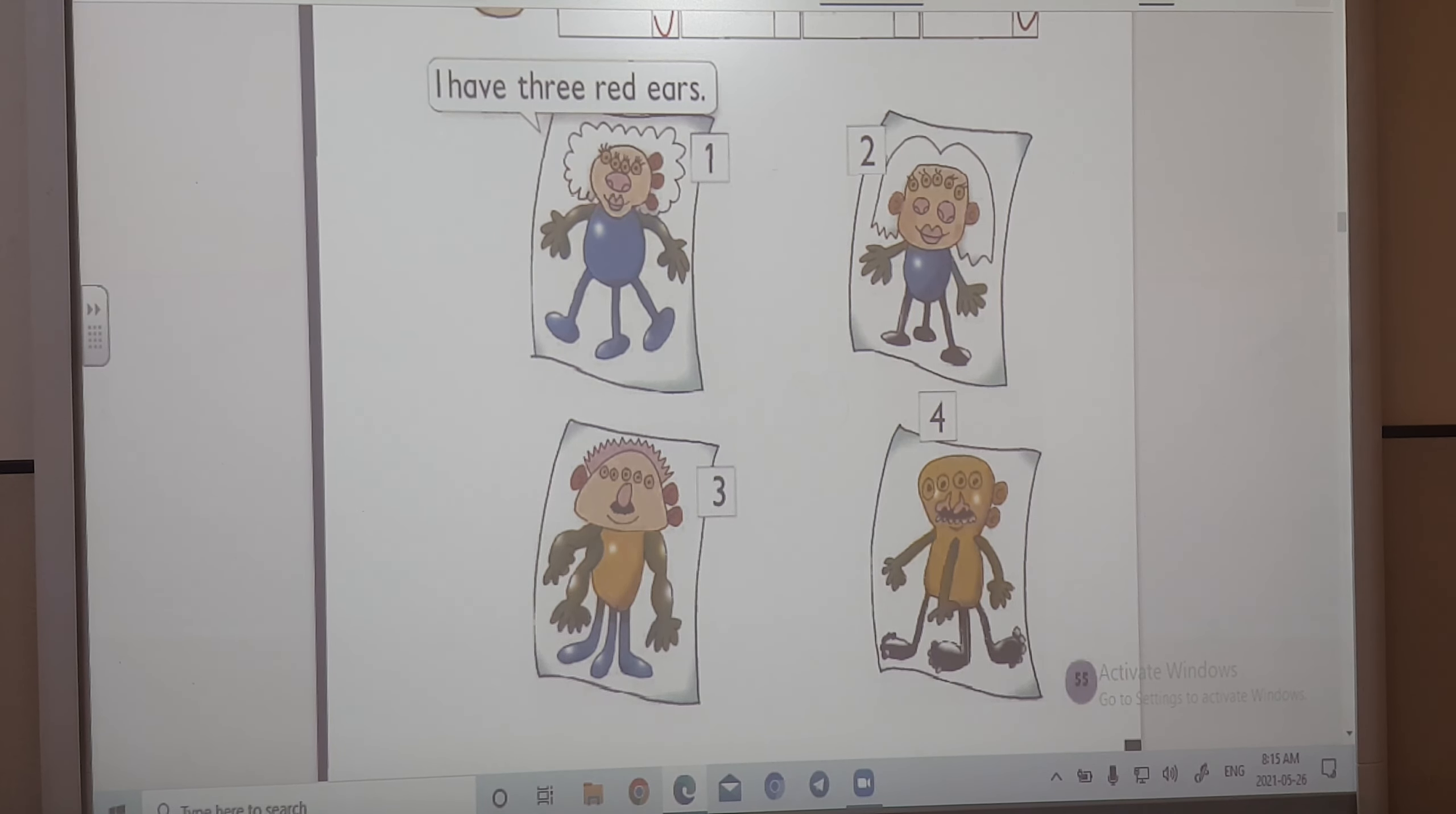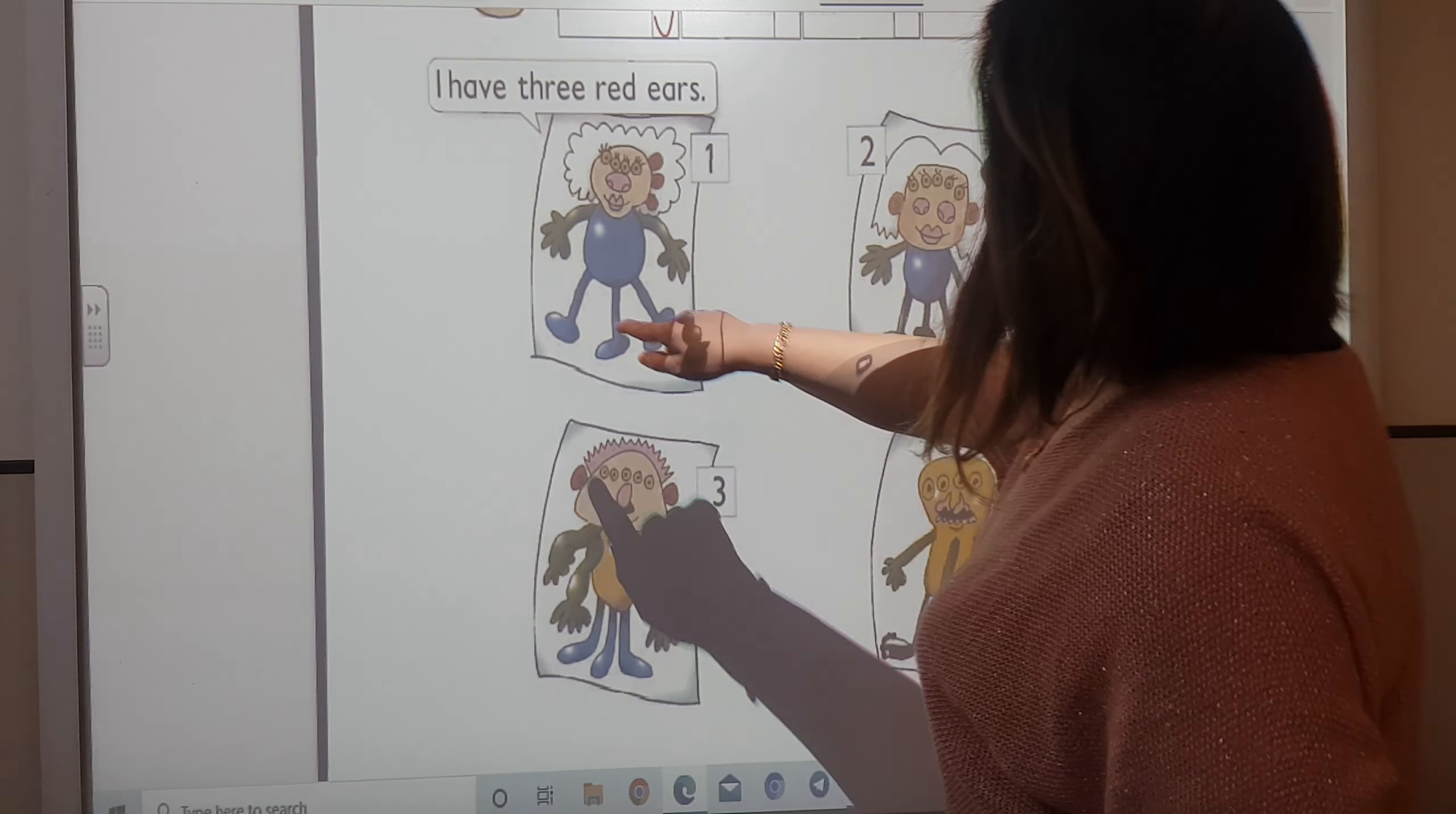Description one. My monster has three blue legs. She has a pink nose. She has three red ears. She has a blue body. She has four yellow eyes. She has two green arms. She has white hair. Yes, correct.